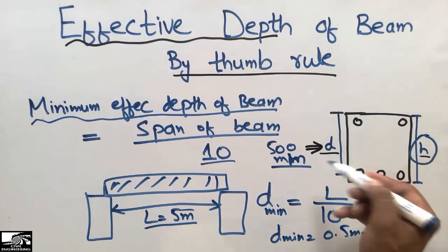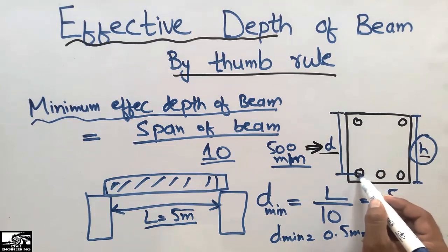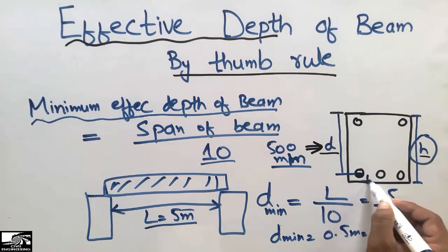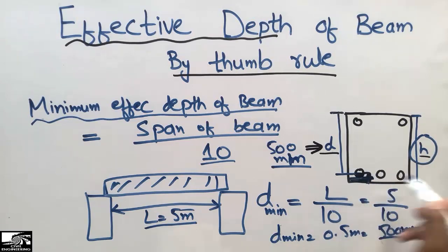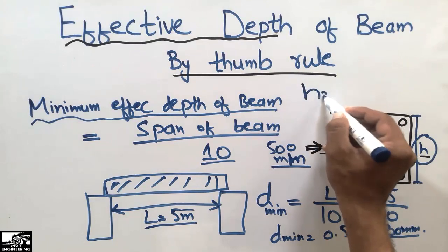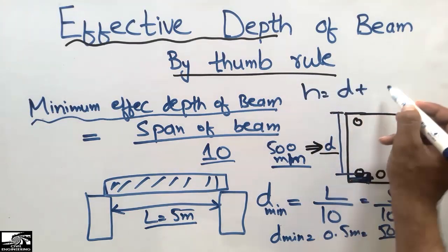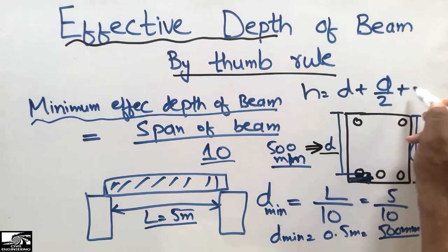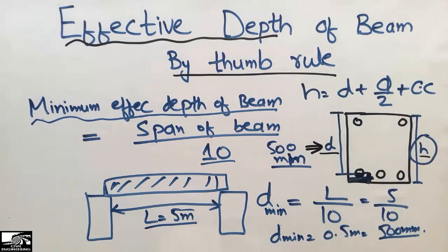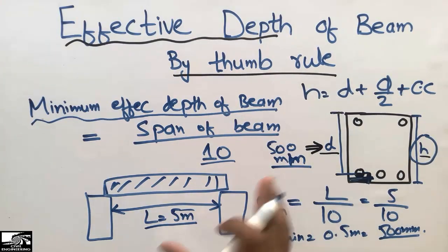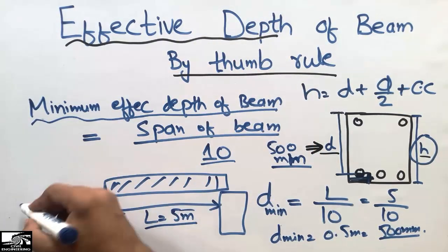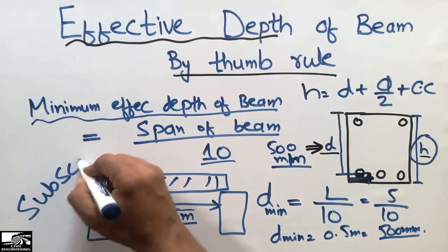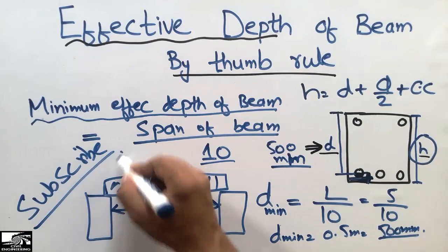You can find the total depth of the beam by adding half the bar diameter and the clear cover to the effective depth. So: H equals the effective depth plus diameter divided by 2 plus the clear cover of the beam. By adding these two values to the effective depth, we get the total depth H. This was the shortcut method to find the effective depth of beam by thumb rule. Don't forget to subscribe to our channel — thank you for watching.